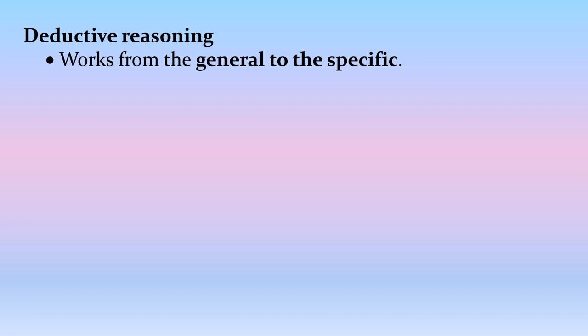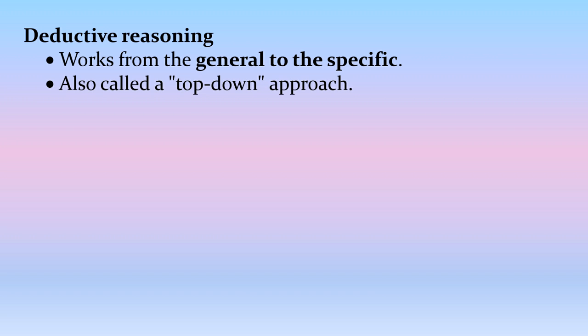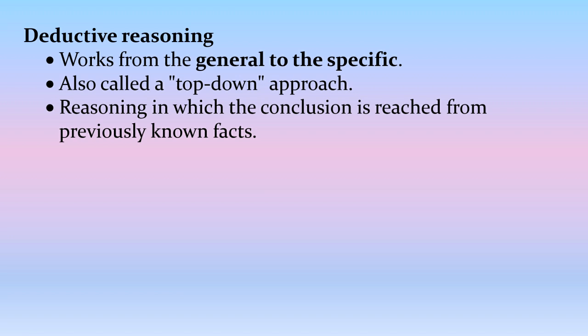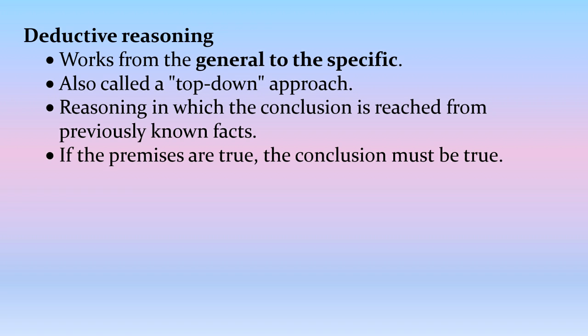Deductive reasoning is where you deduce — you work from really general to really specific. It's also called the top-down approach: you start at the top with a big general statement and get yourself down to a narrowed viewpoint. It is defined as the reasoning in which the conclusion is reached from previously known facts. As long as the premises are true, the conclusion must be true. That's the key assumption — if the premises are true, the conclusion must be true.